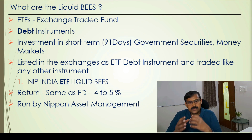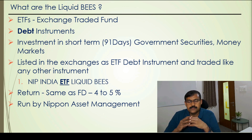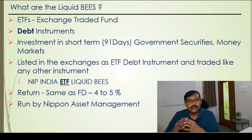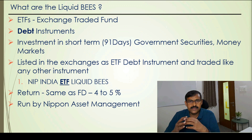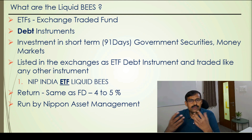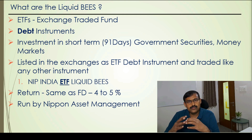The return from liquid bees is the same as a fixed deposit, which is around three to five percent. These are also run by the Nippon Asset Management fund house. Simply put, liquid bees are fixed deposit instruments available on the exchange. You can buy and sell them at any time and earn the same interest rate as a fixed deposit — you don't have to go to a bank; just use your trading account.